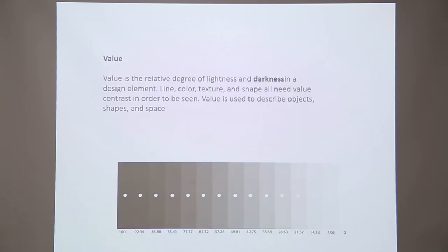The last one is your value. Value is when a particular colour you have chosen is shown in a different dimension — from the highest 100 percent to the least 0 percent. It is the degree of shade you are going to provide from 100 to 0. The main purpose of this is to show similarity or variation in your layout or a poster. That is all for today's class.